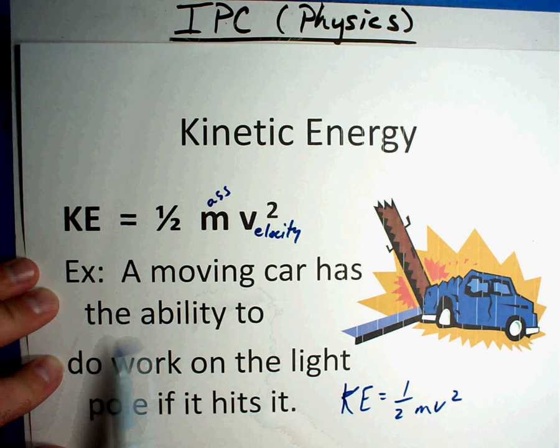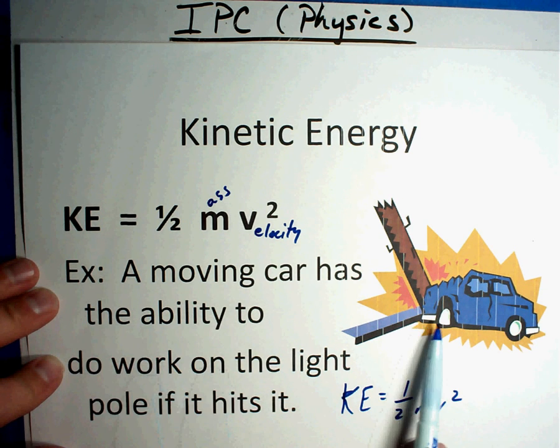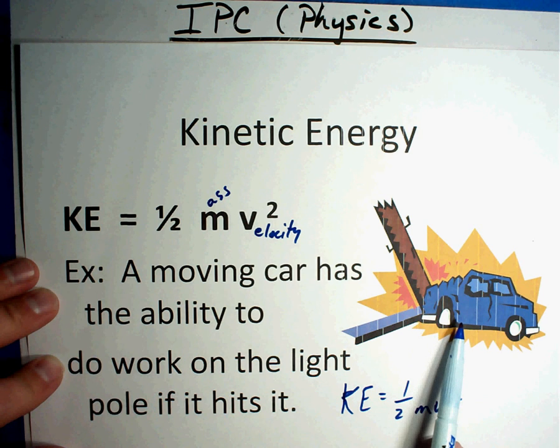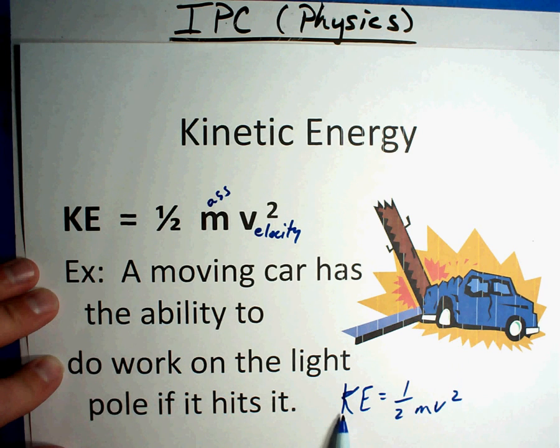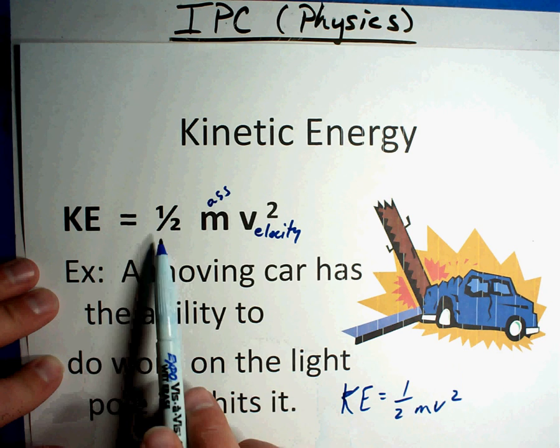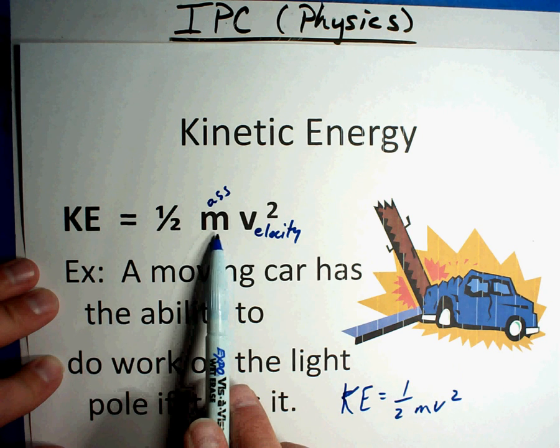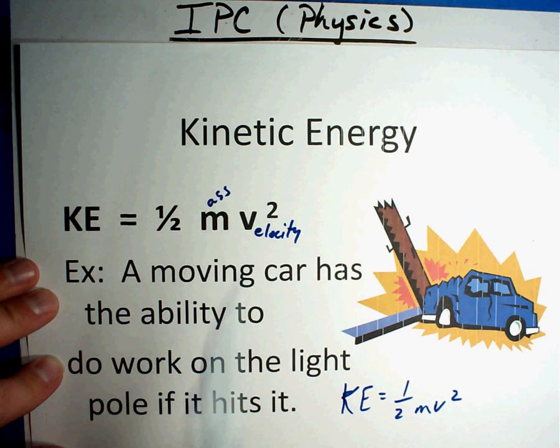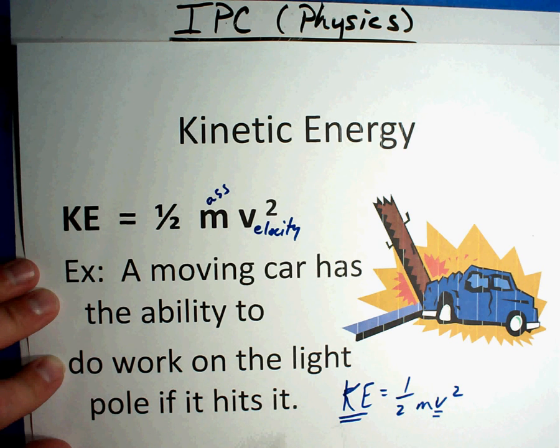Okay, for example, the moving car has the ability to do work on the light pole when somebody has an accident when it hits it. You can calculate the kinetic energy that car had. It's one half, whatever the mass of that car is, times the velocity squared. Now if you look at that formula, you'll notice with velocity squared, that number is going to get big real quick. The faster you're going, the more kinetic energy something has. That's kinetic energy.